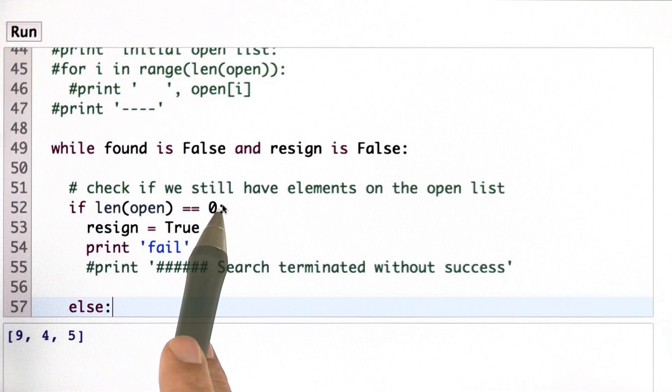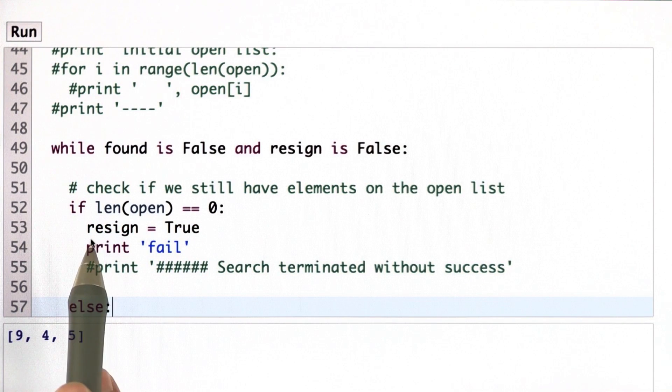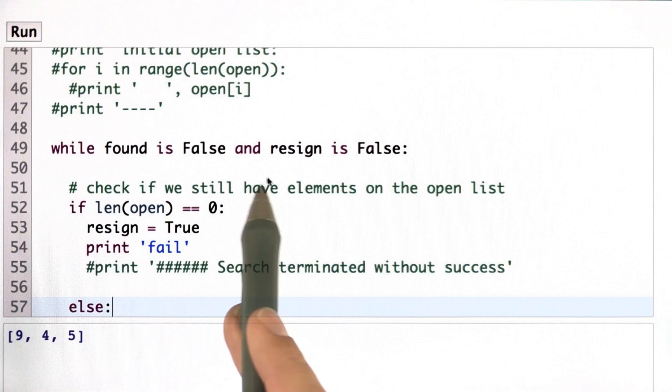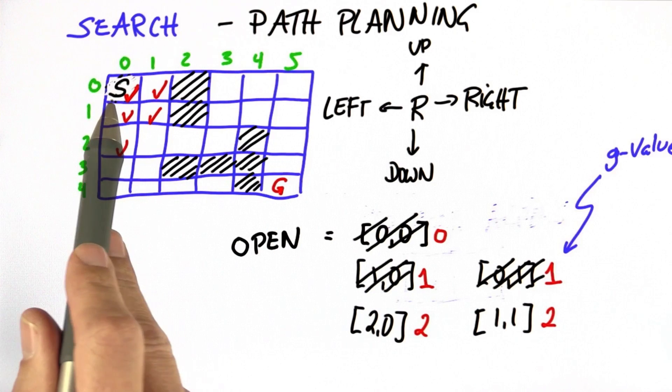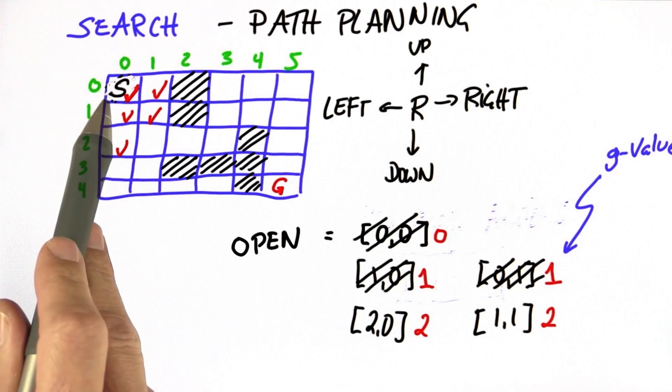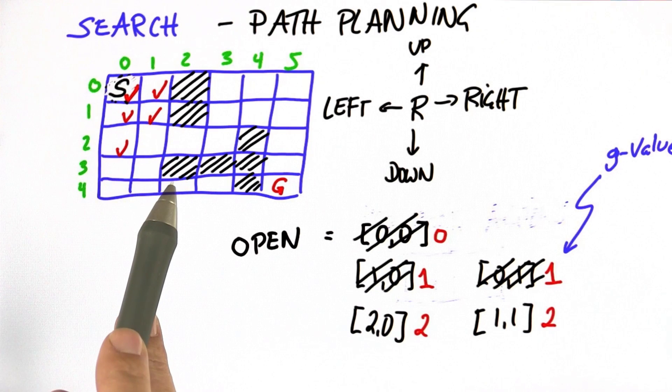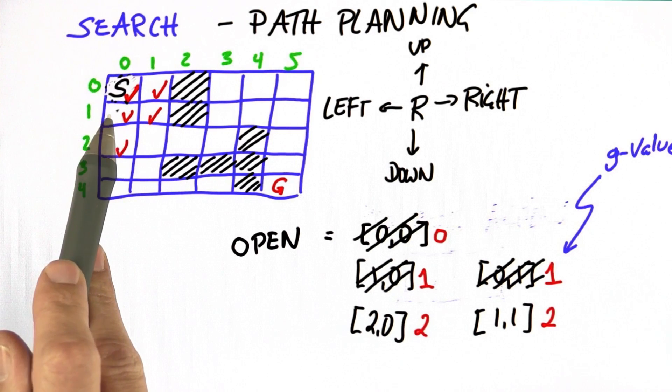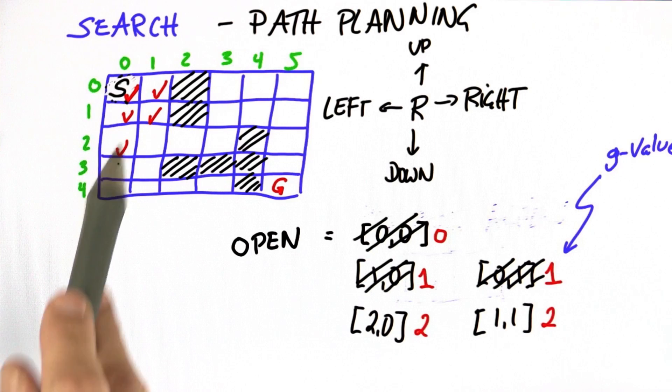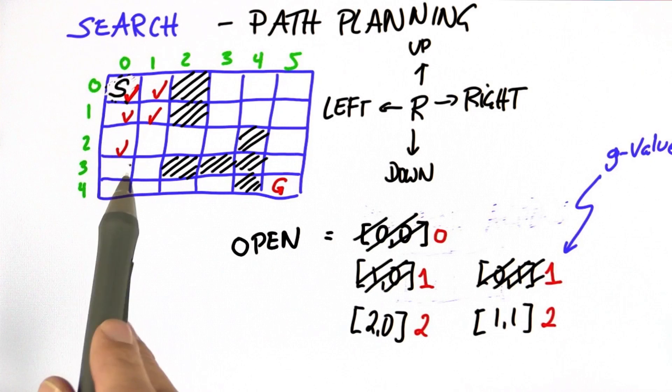If my open list is empty, there's nothing to expand, then resign is true and I print fail. So this is one of the two terminating conditions. You can convince yourself there's no path from s to g. We will expand every node on the left side of the barrier until we finally run out of nodes to expand, at which points the open list will be empty and our search failed.